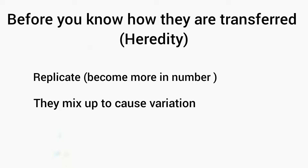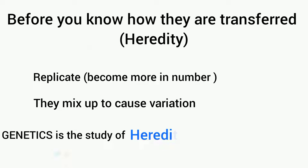Before scientists can understand how genes are transferred, they need to understand how they are replicated and how a mix-up causes variation. Genetics is therefore also defined as the study of heredity and variation. So now we have two definitions for genetics.